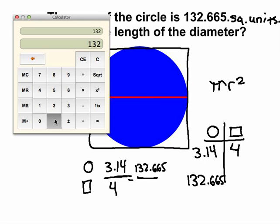To do that, I can do 132.665 divided by 3.14. And I'm multiplying by 42.25. Whenever I do to one side, I must do to the rest. So, I need to multiply that denominator of 4 times 42.25. And I get 169.